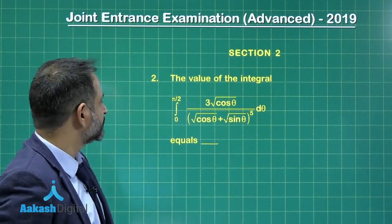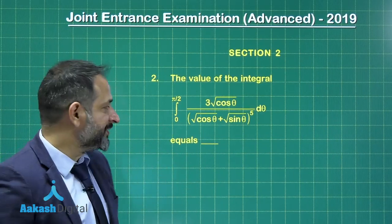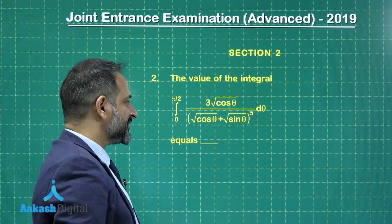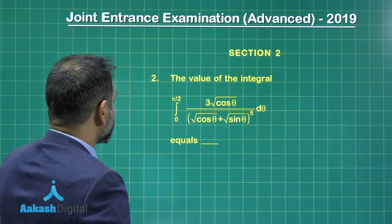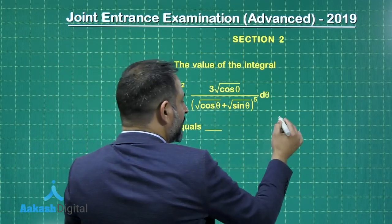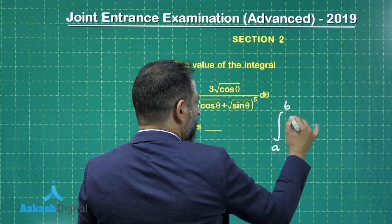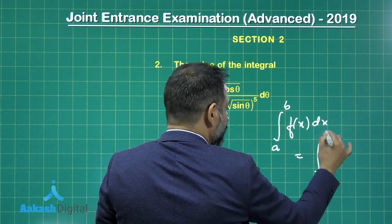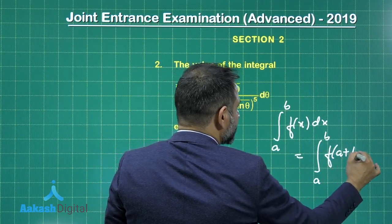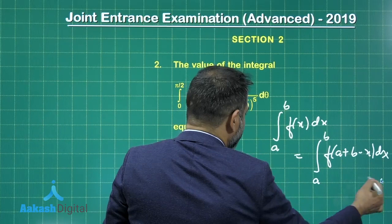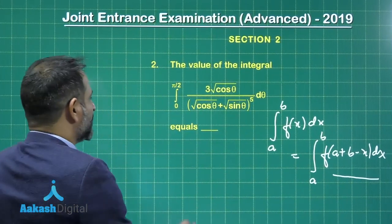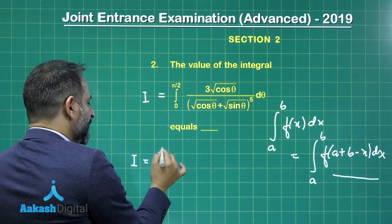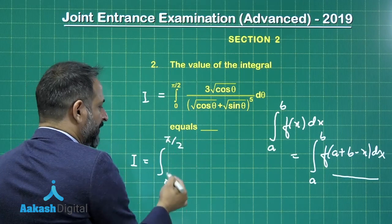Here is the next problem — a question from definite integrals. The integral is of cube root of cos θ divided by (cube root of cos θ plus cube root of sin θ), whole raised to power 5, from 0 to π/2. This problem uses the important property that the integral from A to B of f(x)dx equals the integral from A to B of f(A+B−x)dx, so the value of the definite integral will not change. Let us treat this as I, applying this property where A is 0 and B is π/2.